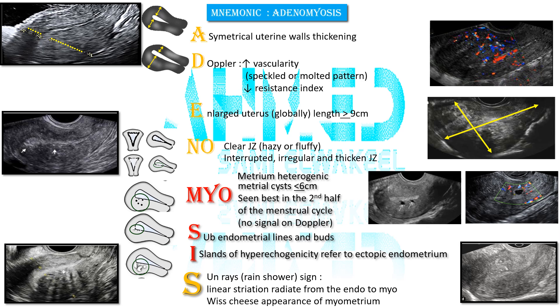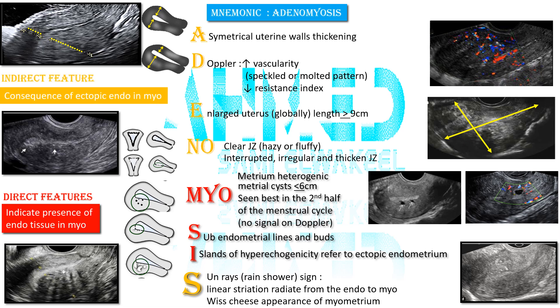The final S stands for Swiss cheese appearance of the myometrium. There are direct features, shown in red, which indicate the presence of endometrial tissue within the myometrium. And indirect features, shown in orange, which are a consequence of ectopic endometrium in the myometrium. Not all signs are found in all cases.